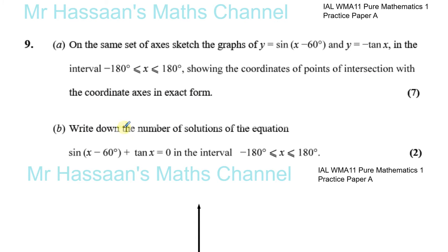Part B asks us to write down the number of solutions to the equation sine(x minus 60) plus tan x equals zero in the same interval.